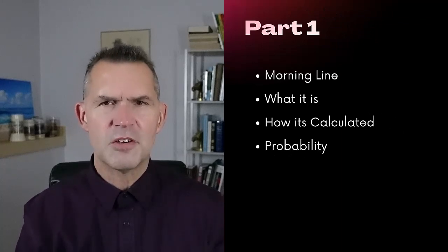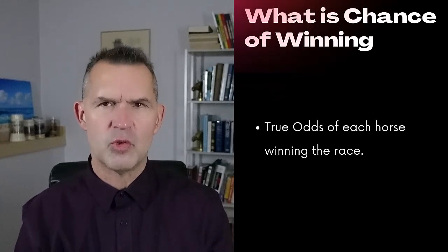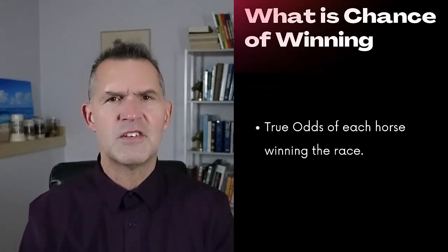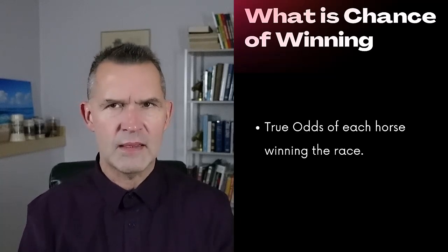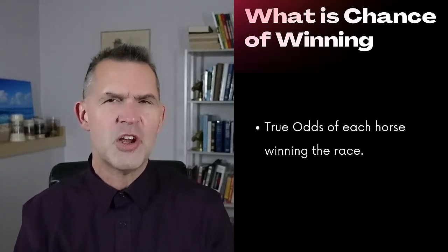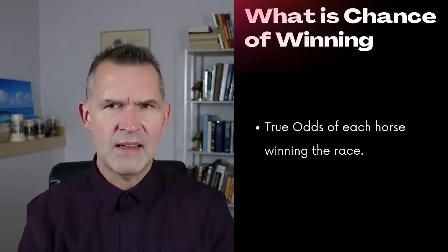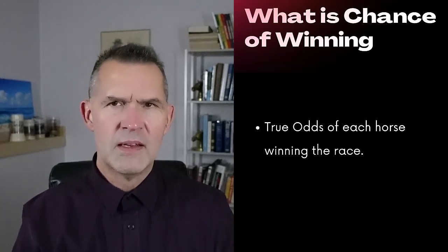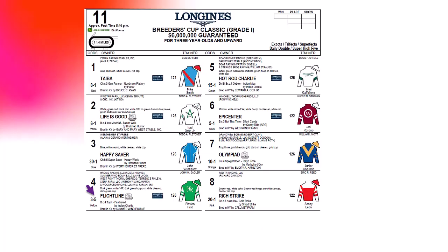What you're trying to determine is the true odds of each horse winning the race. The morning line is trying to determine how the public is going to see the race. But as a handicapper, ideally you know something about that race or horse that the general public does not know. You're calculating that into your personal odds line to hopefully create some value and see if there are any overlays. We're going to do an example again with the 2022 Breeders' Cup Classic — this is how I handicapped that race.